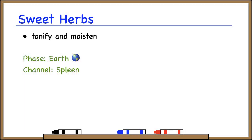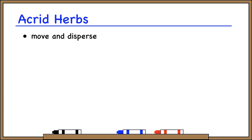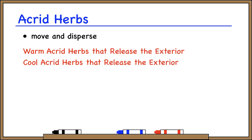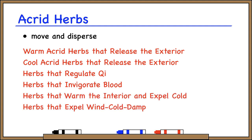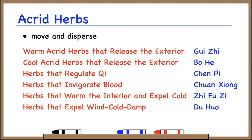Acrid herbs move and disperse. We have the categories warm acrid herbs that release the exterior and cool acrid herbs that release the exterior — of course these herbs are acrid; it's in the name of the category. They use the acrid flavor to disperse pathogens from the exterior. Our moving herbs, like herbs that regulate qi and herbs that invigorate blood, are also acrid in flavor. Herbs that warm the interior use the acrid flavor to disperse coldness, and herbs that treat bi-syndrome are acrid to disperse wind-cold-damp. So herbs like Gui Zhi, Wu He, Chen Pi, Chuan Xiong, Zhi Fuzi, and Du Huo are all acrid because they have some moving or dispersing property. The acrid flavor corresponds to metal and the lung channel.